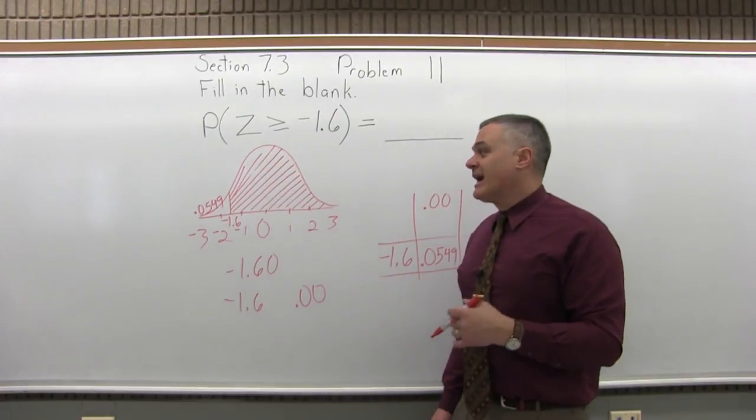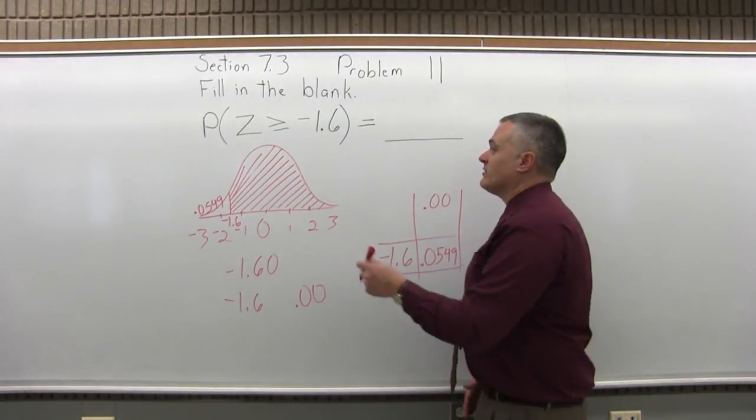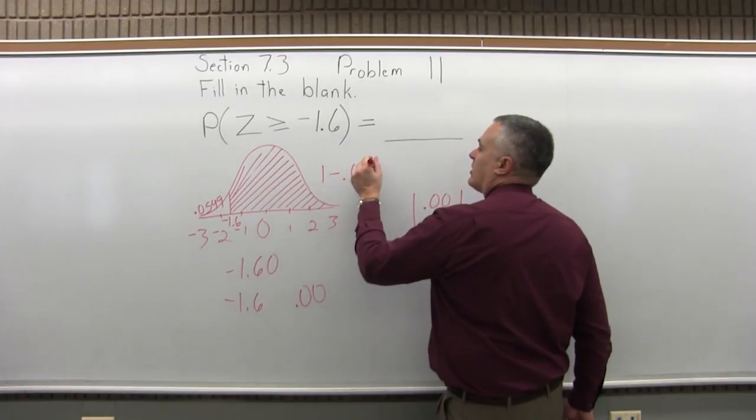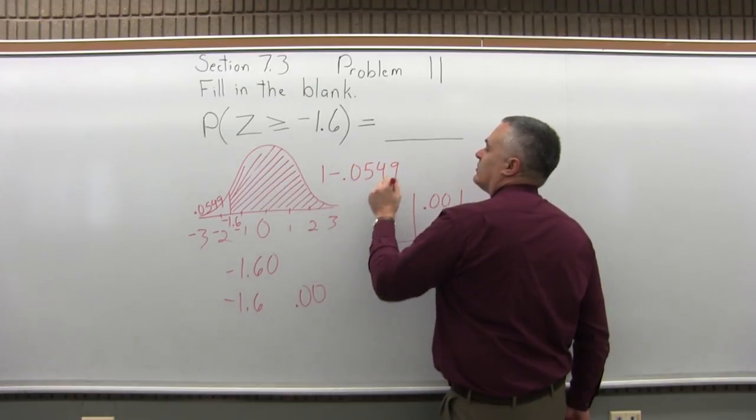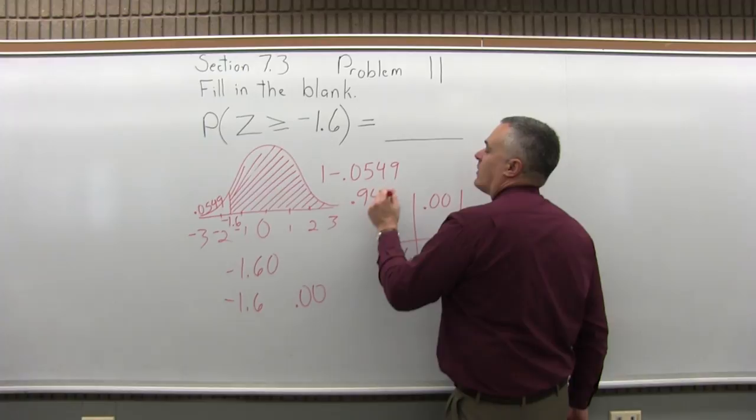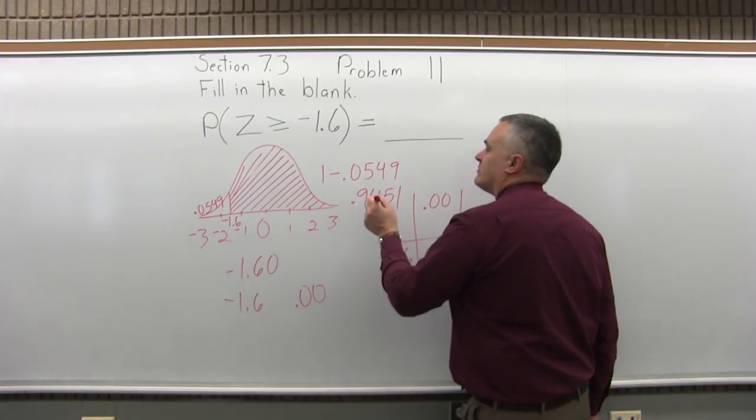I want the shaded area on the other side. So to find that, I have to do one minus the value from the chart. One minus point zero five four nine, which will give me point nine four five one when I do the subtraction.